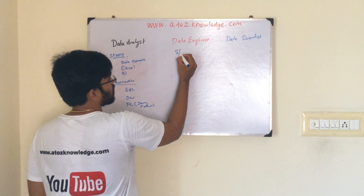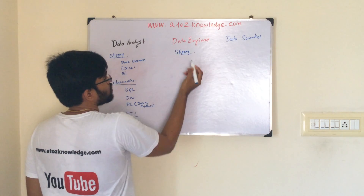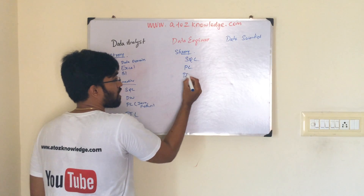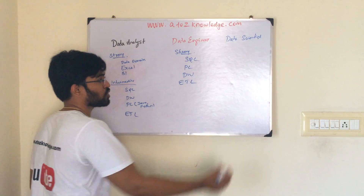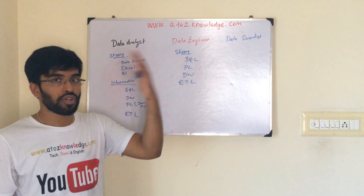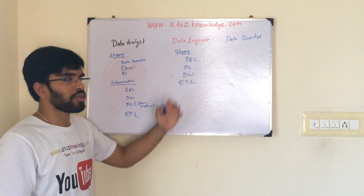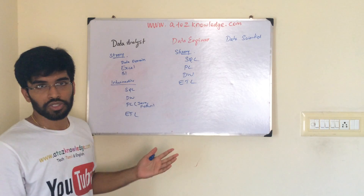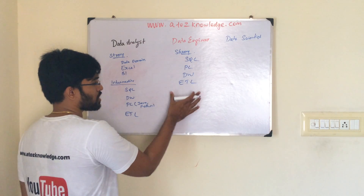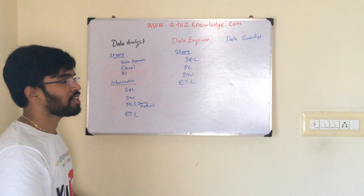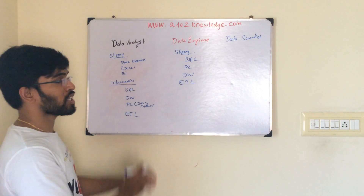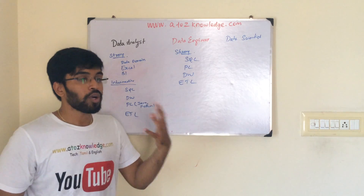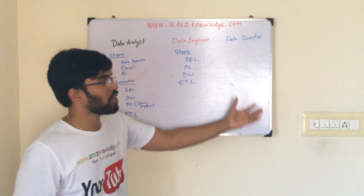Coming to the data engineer, the strong skill set required includes being very good in SQL, programming language, data warehouse theoretical concepts, and the ETL tool you are hired for. If you are hired for Informatica, you need to know Informatica very well with hands-on experience. If hired for big data, you need to know big data. Data engineers tell you what has already happened in the data — and that output serves as input for the data scientist.